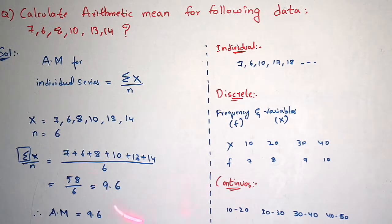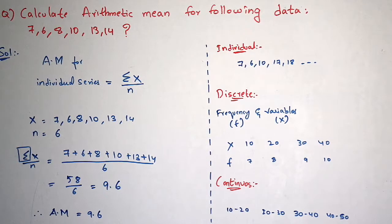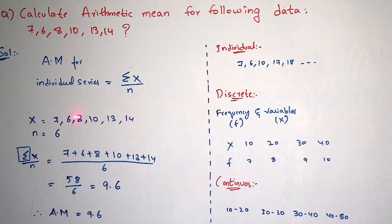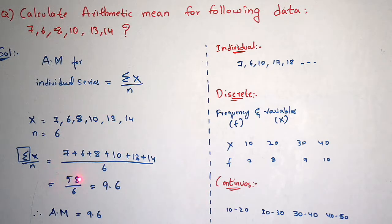Now apply the formula sigma x by n. Sigma indicates total summation — you have to add all of the data. So sigma x will be 7 plus 6 plus 8 plus 10 plus 12 plus 14, which equals 58. So you write 58 by 6. Calculate: you will get 9.6.